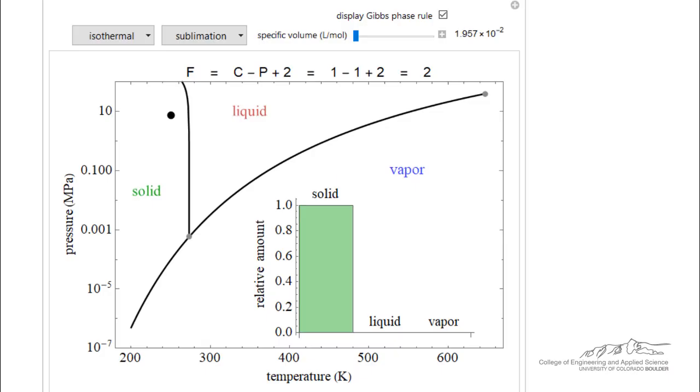Let's look at an isothermal process and we'll look at sublimation. As the volume changes, you'll notice the volume is changing very slowly here. We're lowering the pressure. We get to here. Now sublimation takes place, namely solid converting to vapor.